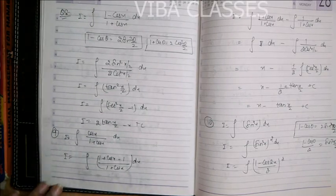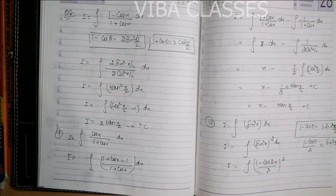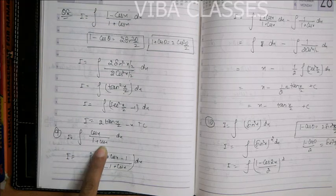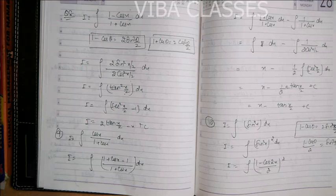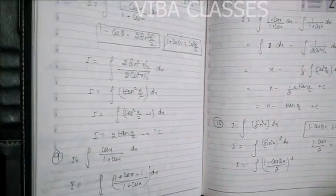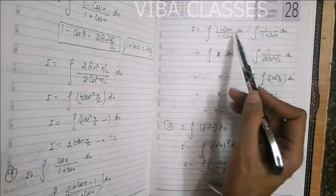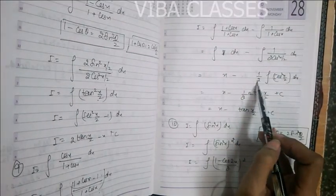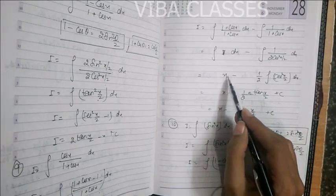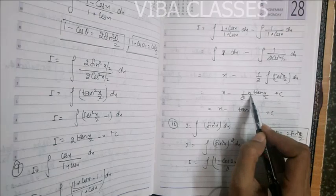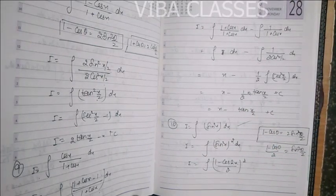Question number 9 में denominator में 1 + cos(x) है — golden formula लगेगा. लेकिन एक पूरे question में एक angle half करते हैं तो पूरे question में half होना चाहिए. अगर denominator में 2 cos²(x/2) लिखते हैं तो numerator में भी x/2 वाला कुछ होना चाहिए. तो direct golden formula नहीं लगाएंगे — थोड़ी adjustment करेंगे. Numerator को (1 + cos x) / (1 + cos x) और extra part अलग किया. 1 + cos(x) = 2 cos²(x/2). Integration: 1 का integration = x, sec²(x/2) का integration = tan(x/2), derivative of x/2 = 1/2, so multiply by 2 — 2 से 2 cancel — you get your answer.